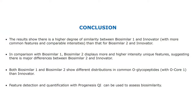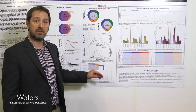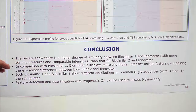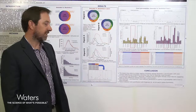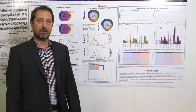In conclusion, the results show there is a higher degree of similarity between biosimilar one and the innovator than between biosimilar two and the innovator. Compared with biosimilar one, biosimilar two displays more and higher-intensity unique features, suggesting a major difference from the innovator. Looking more specifically at core O-glycopeptides, both biosimilar one and biosimilar two show different distributions than the innovator. Feature detection and quantification with Progenesis QI can be used to assess biosimilarity. Thank you for your time.